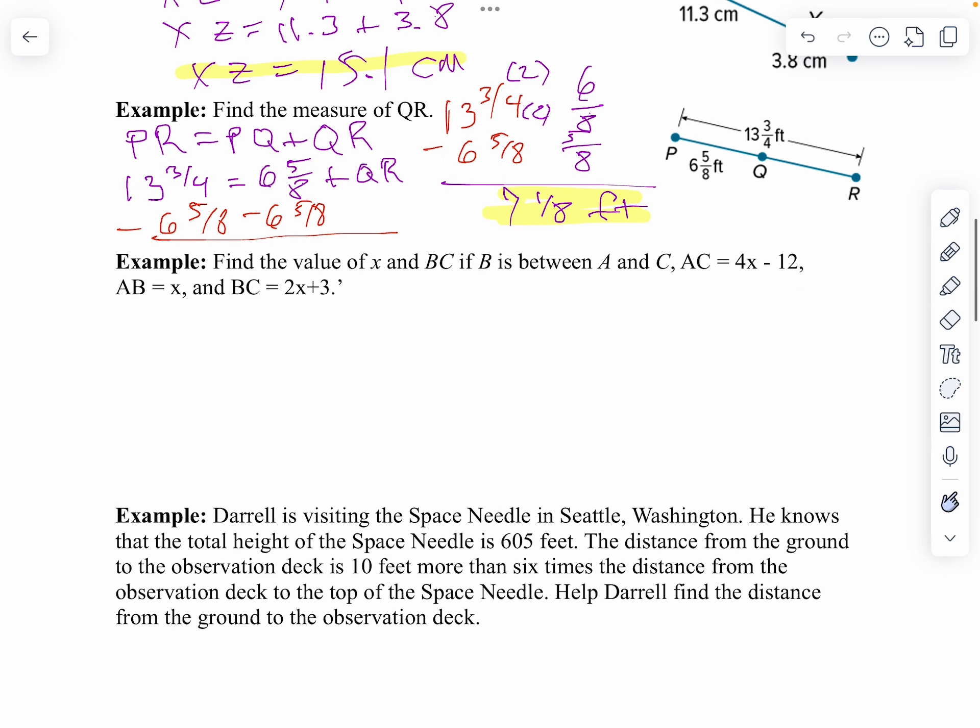Now, what happens if I don't have a picture? We'll make a picture. I want to find the value of x and BC. Notice, there's two parts to this answer. I want more than just x. And we're told B is between A and C. So, I'm going to draw that out here. So, I have A and C. B is some place in between. I don't know where. I'm just going to call it right there. Now, I know A to C is 4x minus 12. And, I know A to B is x. And I know B to C is 2x plus 3.